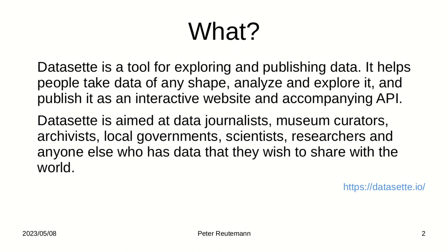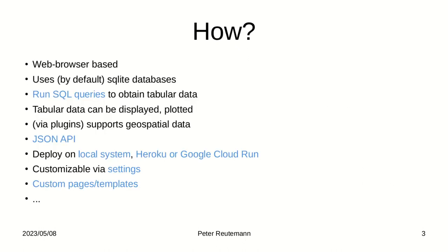So how does it work? It's web browser based, so you run things in a web platform and can access it from anywhere, especially if you deploy it to host a website. By default, when developing, it uses SQLite databases as a backend, meaning you can run SQL queries to generate tabular data which can then be displayed in a table, worked with, plotted, and so on. It has quite a number of plugins. I'm going to show some things regarding geospatial data. It also offers a JSON API where you can access and retrieve data, so it doesn't have to be just through the web interface.